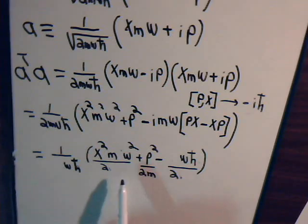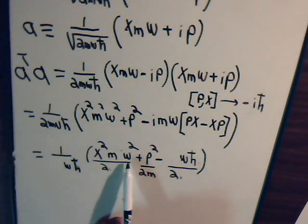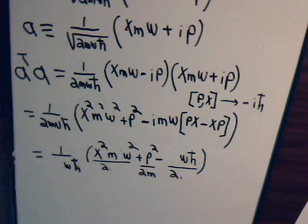And that was 1 half m omega squared x squared. That's what this is. m omega squared x squared over 2. And we also have this term.